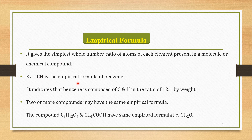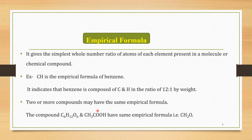For example, CH is the empirical formula of benzene. It indicates that benzene is composed of carbon and hydrogen in the ratio of 12 to 1 by weight. Two or more compounds may have the same empirical formula. For example, C6H12O6 (glucose) and CH3COOH (acetic acid) have the same empirical formula: CH2O.